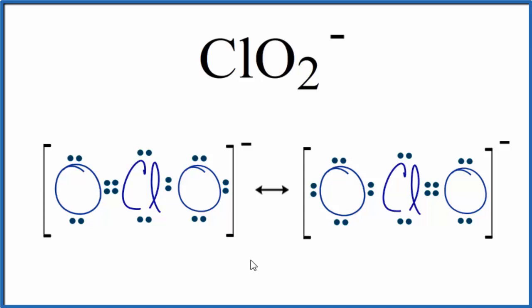This is Dr. B with the major resonance structures for ClO2 minus, the chloride ion. Thanks for watching.